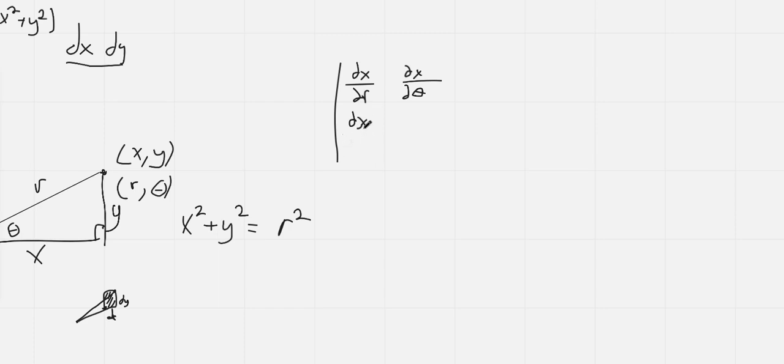And then the second row is the partial of y with respect to dr, and then lastly the partial of y with respect to theta.